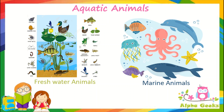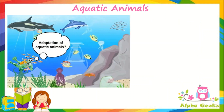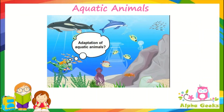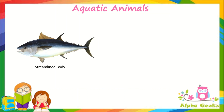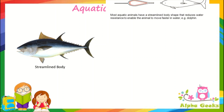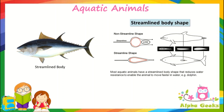Since they spend their entire lives in water, they have developed certain structural characteristics that they need to survive underwater. Let's see what the adaptations in aquatic animals are. Fish have a streamlined body which allows them to move easily in water. Streamlined means that the two ends of the body are pointed and the middle portion is wide. This helps to reduce water resistance so that the fish can move faster in water.